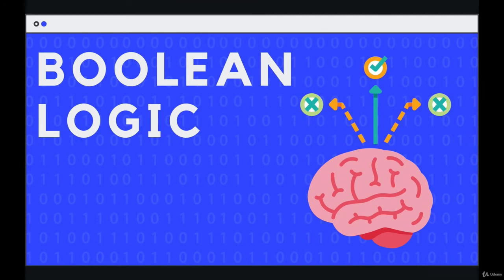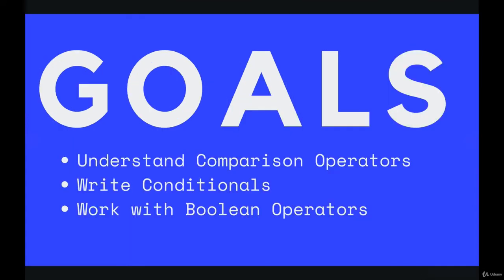That's all we're going to talk about in this section — there's a good amount to cover. Here are some of the goals: we're going to start by talking about comparison operators. Later, we'll talk about a second set of operators called Boolean operators. So our good friend, the true or false primitive value — the Boolean — is coming back, and we'll spend a lot of time getting to know it. Then we'll write conditional statements, which are the actual decisions we make and the branches we can add to our code. I'll see you in the next video when we actually start with comparisons.